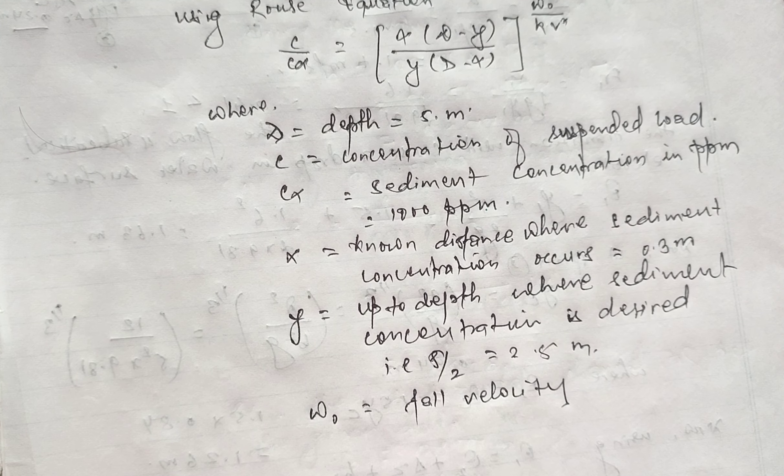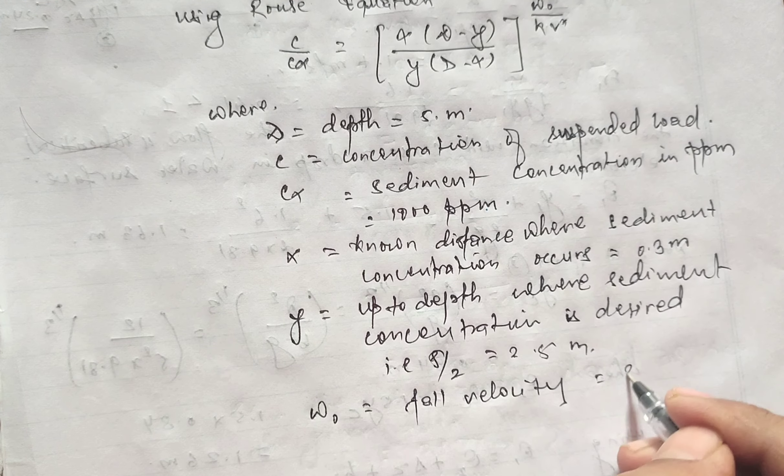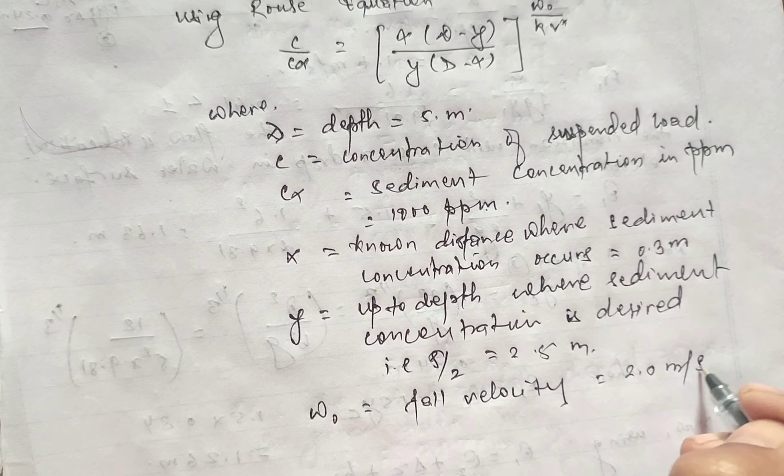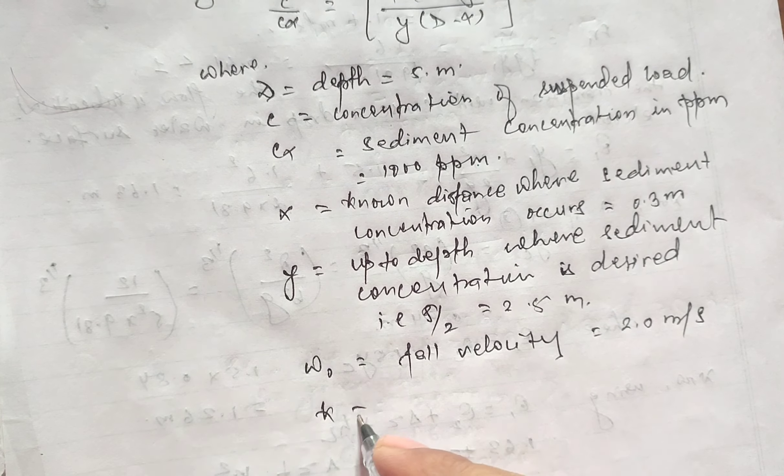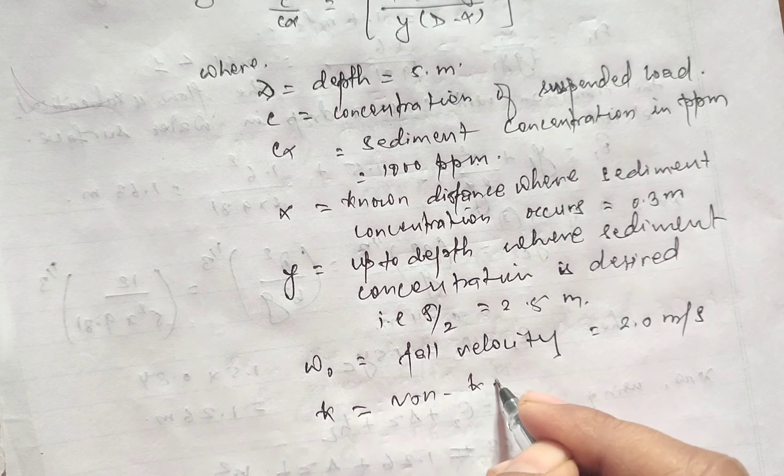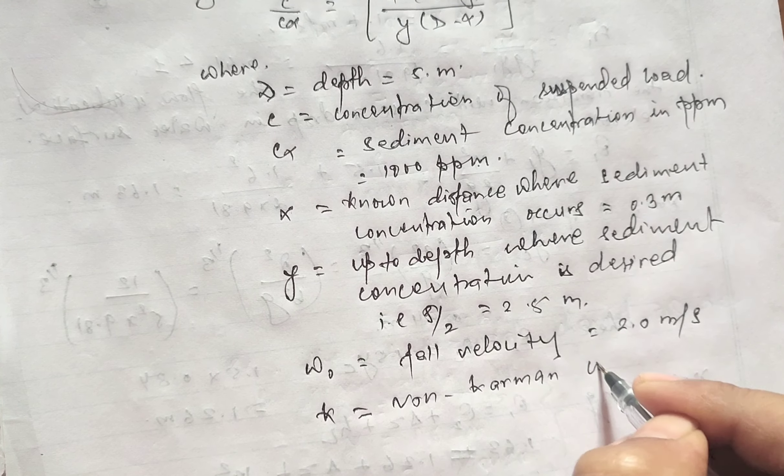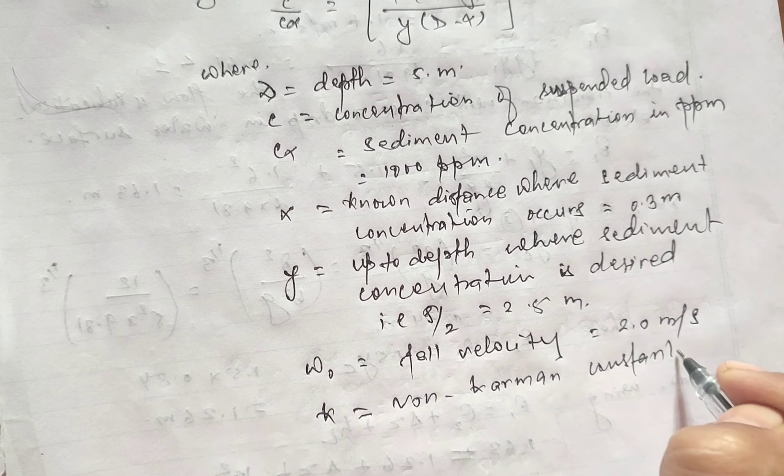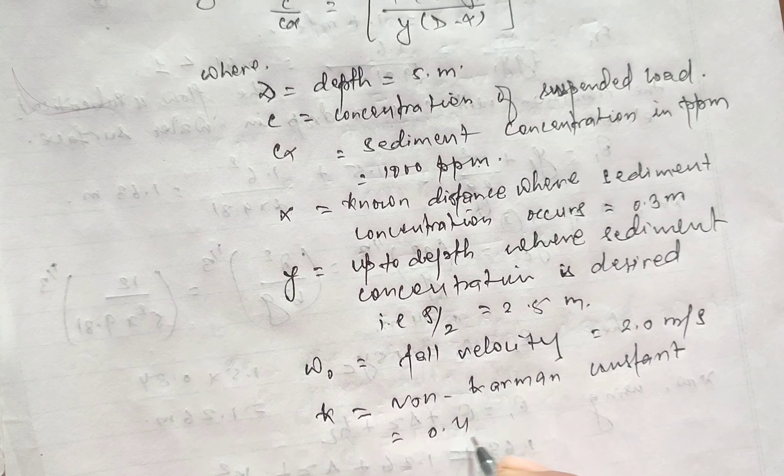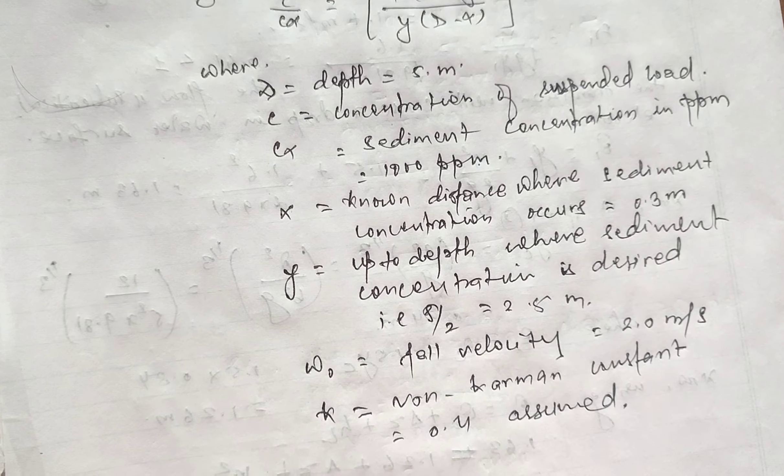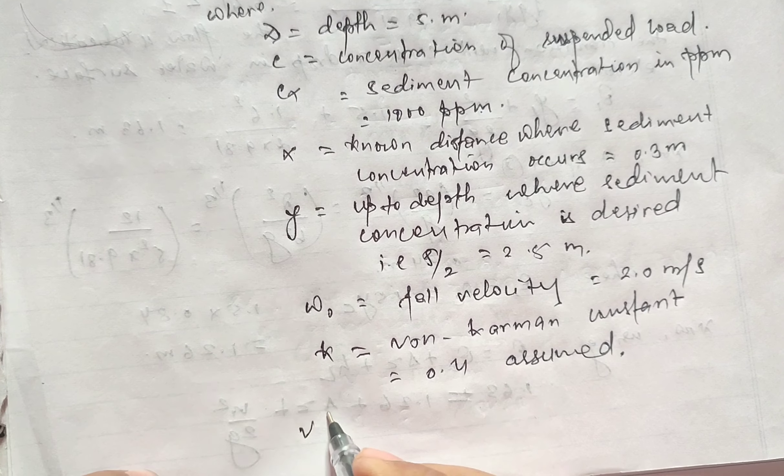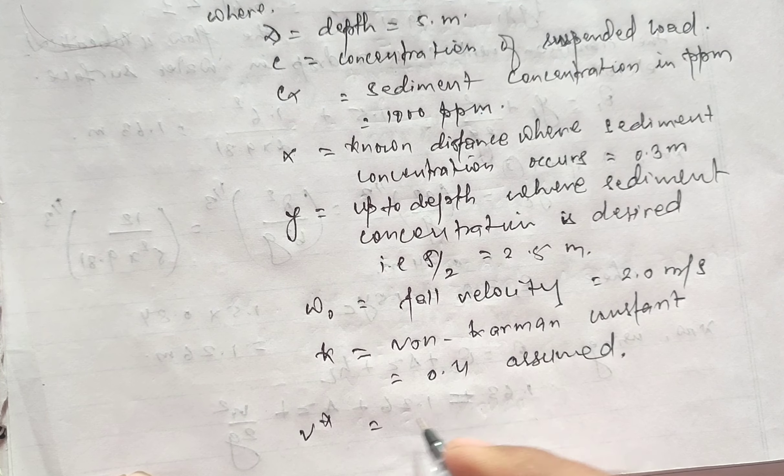of sediment grain in still water, that is given as 2.0 meter per second in the question. And κ equals von Karman constant, that is 0.4 is assumed. And v* equals shear friction velocity.